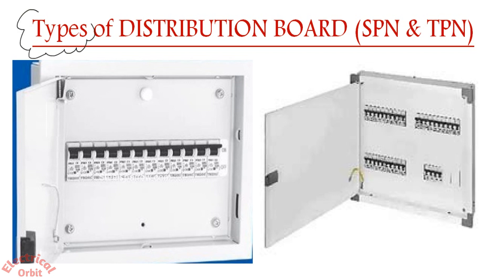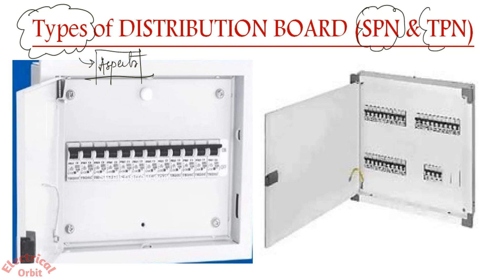Now if we try to define the types of distribution system, it may be in various aspects. The first type is SPN and TPN. SPN stands for Single Phase Neutral, or Single Pole Neutral. This is an SPN DB.